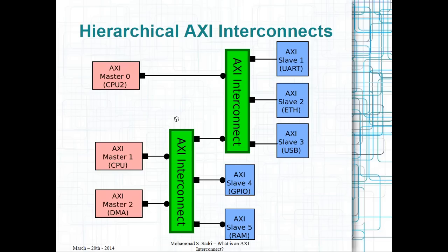I will show practical examples later. In this example, I have AXI Master 1, a CPU, which is capable of accessing any of the available AXI slaves through its port. I also have AXI Master DMA with the same capability. And there is AXI Master 0, which is capable of accessing only the slaves on its local AXI interconnect.